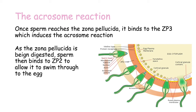As the zona pellucida is being digested, the sperm then binds to another protein called zona pellucida protein 2 or ZP2, which allows the sperm to swim through to the egg and make contact with it.